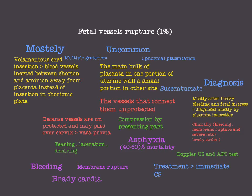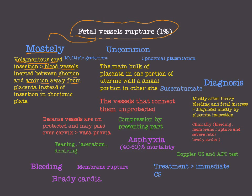Fetal vessel rupture is a rare but important cause of antepartum hemorrhage. It is mostly due to velamentous cord insertion. Velamentous cord insertion is when the blood vessels are inserted between the chorion and amnion — the membranes — away from the placenta.